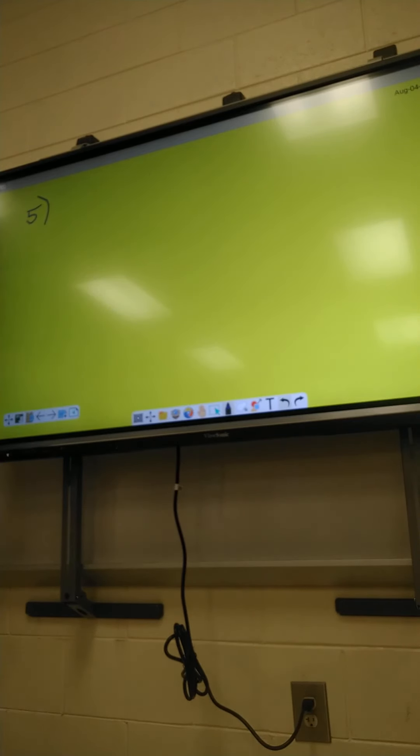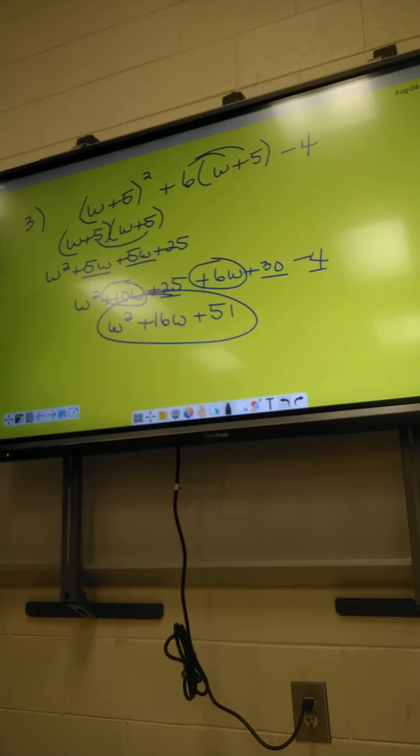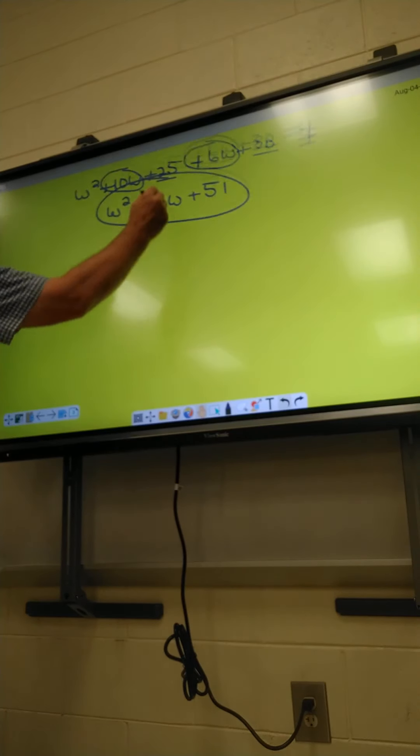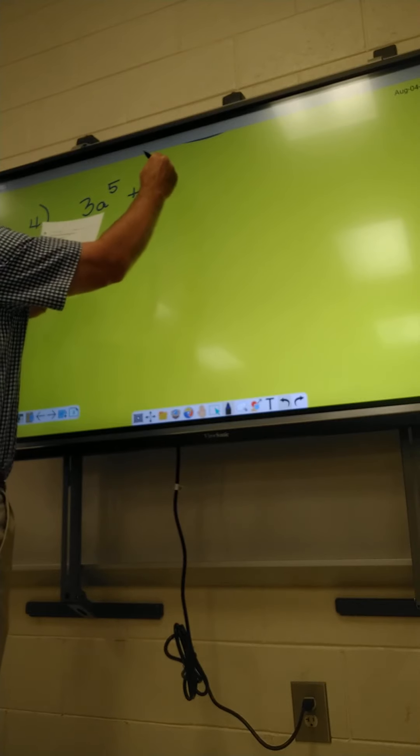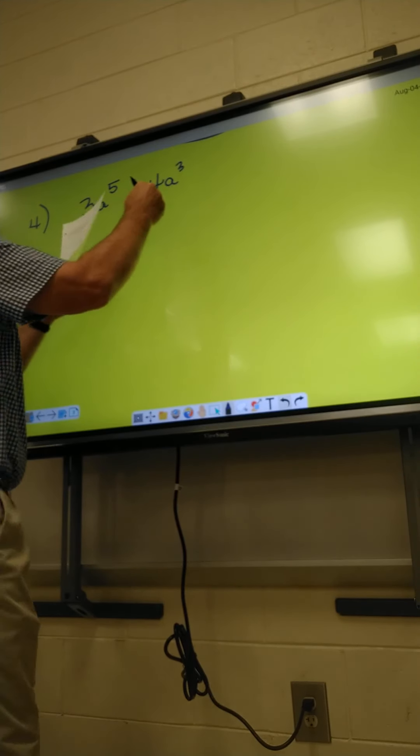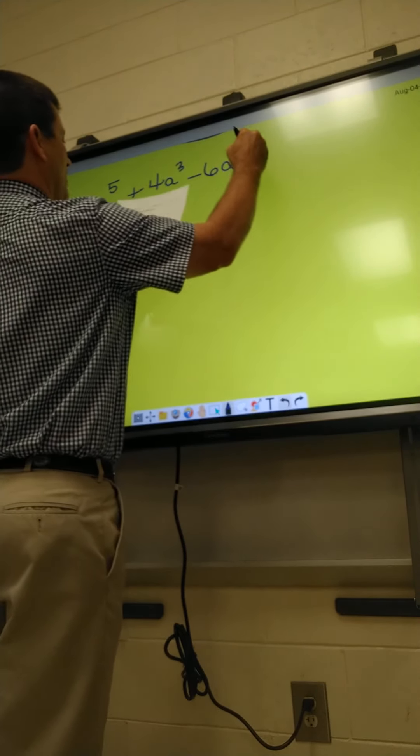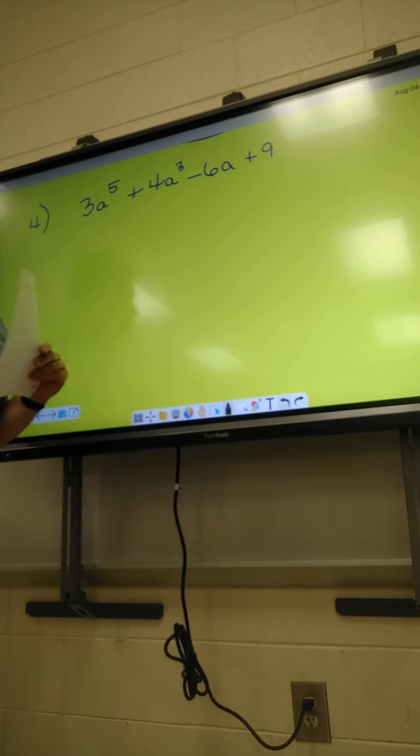Alright, number 4 is a new problem. It's not up there where it's 4. Alright, number 4. Yeah, we didn't do number 4 yesterday. What do we have to plug in on number 4? Look at it. Just an A. So if I plug in an A instead of an X, it's going to be 3A to the 5th plus 4A to the 3rd minus 6A plus 9. Write that down. Just plug in an A instead of the X.